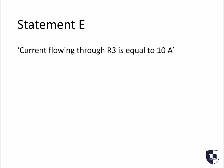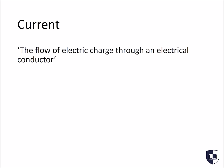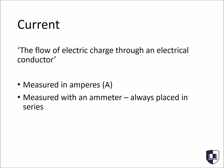So what about statement E? Current flowing through R3 is equal to 10 amps. So before we answer, let's talk about current and the laws which apply to current in circuits. Current can be defined as the flow of electric charge through an electrical conductor. Usually, this would be electrons in a circuit, but if you had a solution, it could be ions instead. We measure current in amperes using an ammeter, which contrary to voltmeters, must always be placed in a series. You need to be familiar with the formula which defines current. So current is the charge divided by the time.